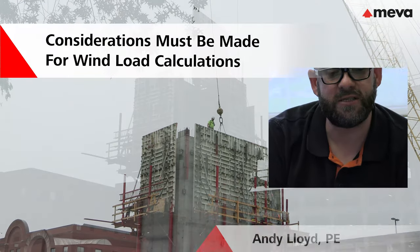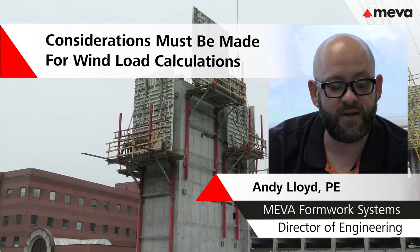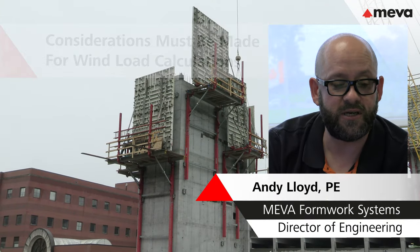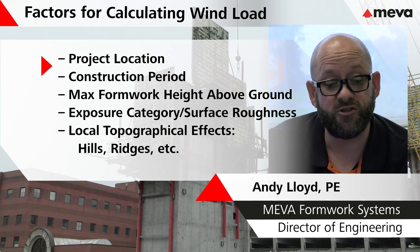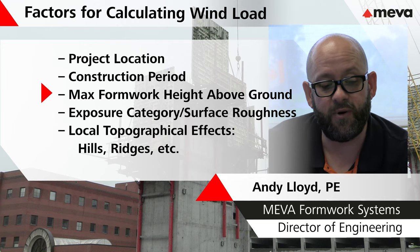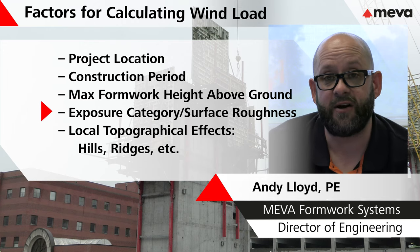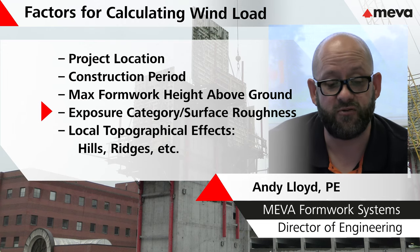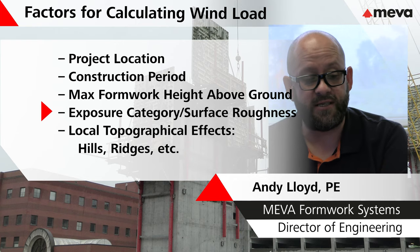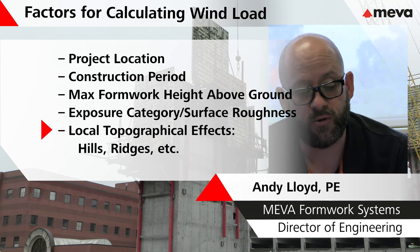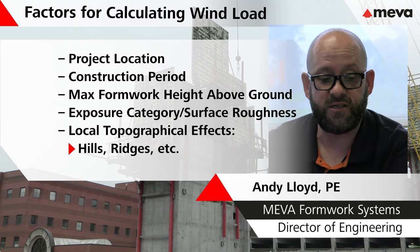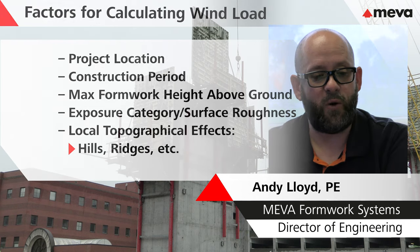We look at various factors, which include the project location, the construction period, the maximum formwork height above ground, the exposure category or the surface roughness in the area surrounding the site, and then possible local topographical effects such as hills, ridges, and escarpments.